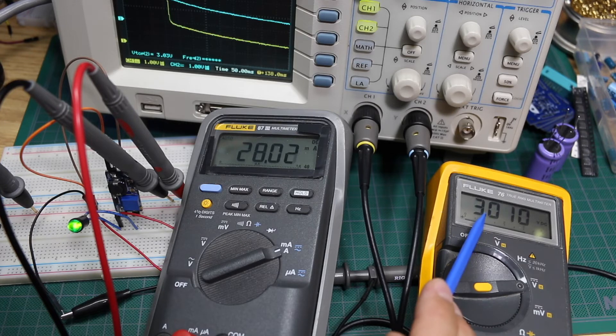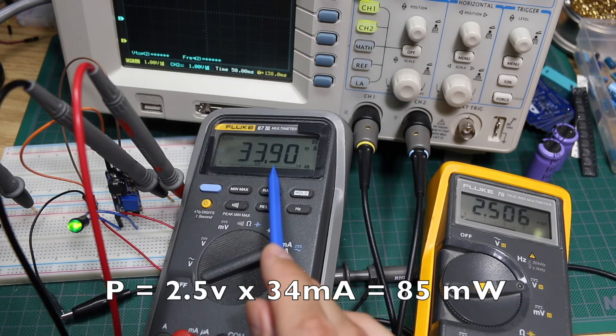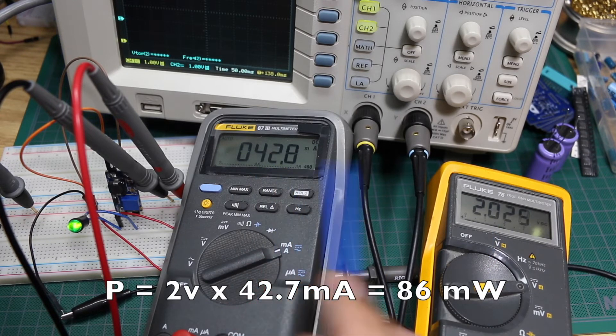So now if I go down to 2.5 volts in, it takes about 34 milliamps. And if I lower to 2 volts, it takes about 42.7 milliamps.